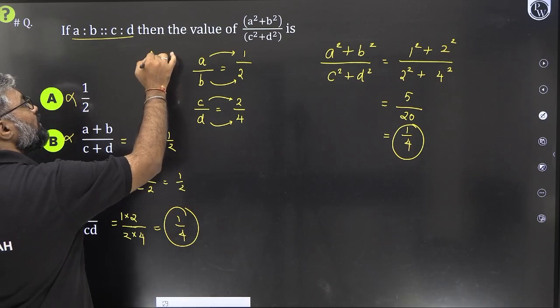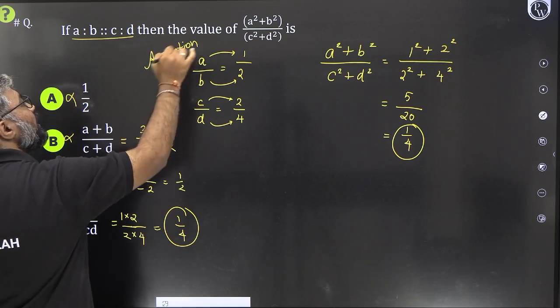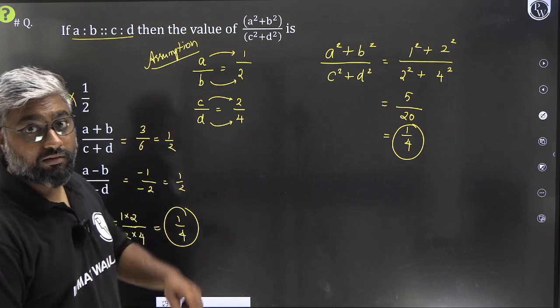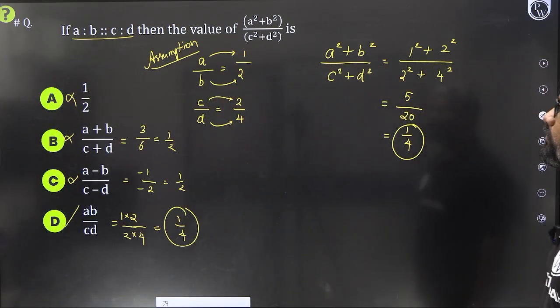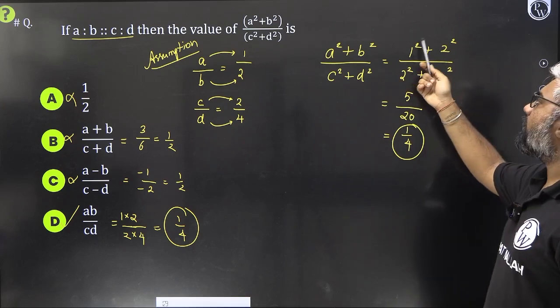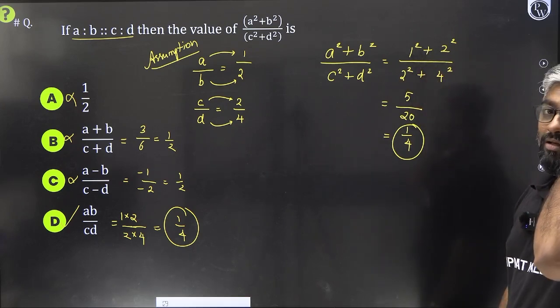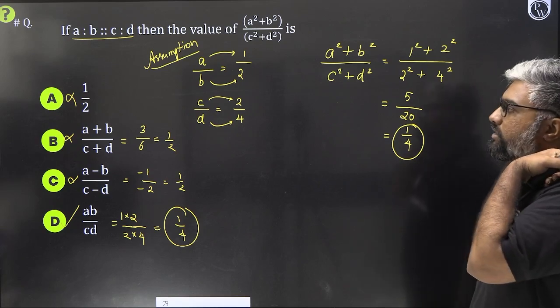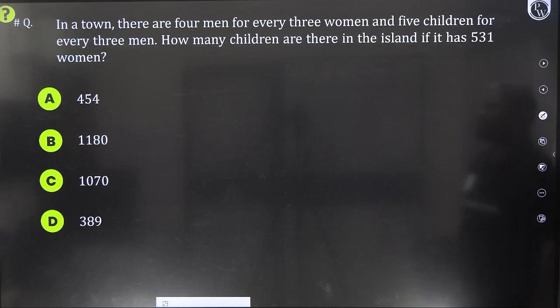So assumption could take you a very long way if you do it in the right direction. If we do 1 by 2 and 1 by 2, if both are 1 by 2 and 1 by 2, then we are getting 1 square plus 2 square by 1 square plus 2 square. That way we will end up getting 1 which multiple options can give you that. So please be very careful about that.